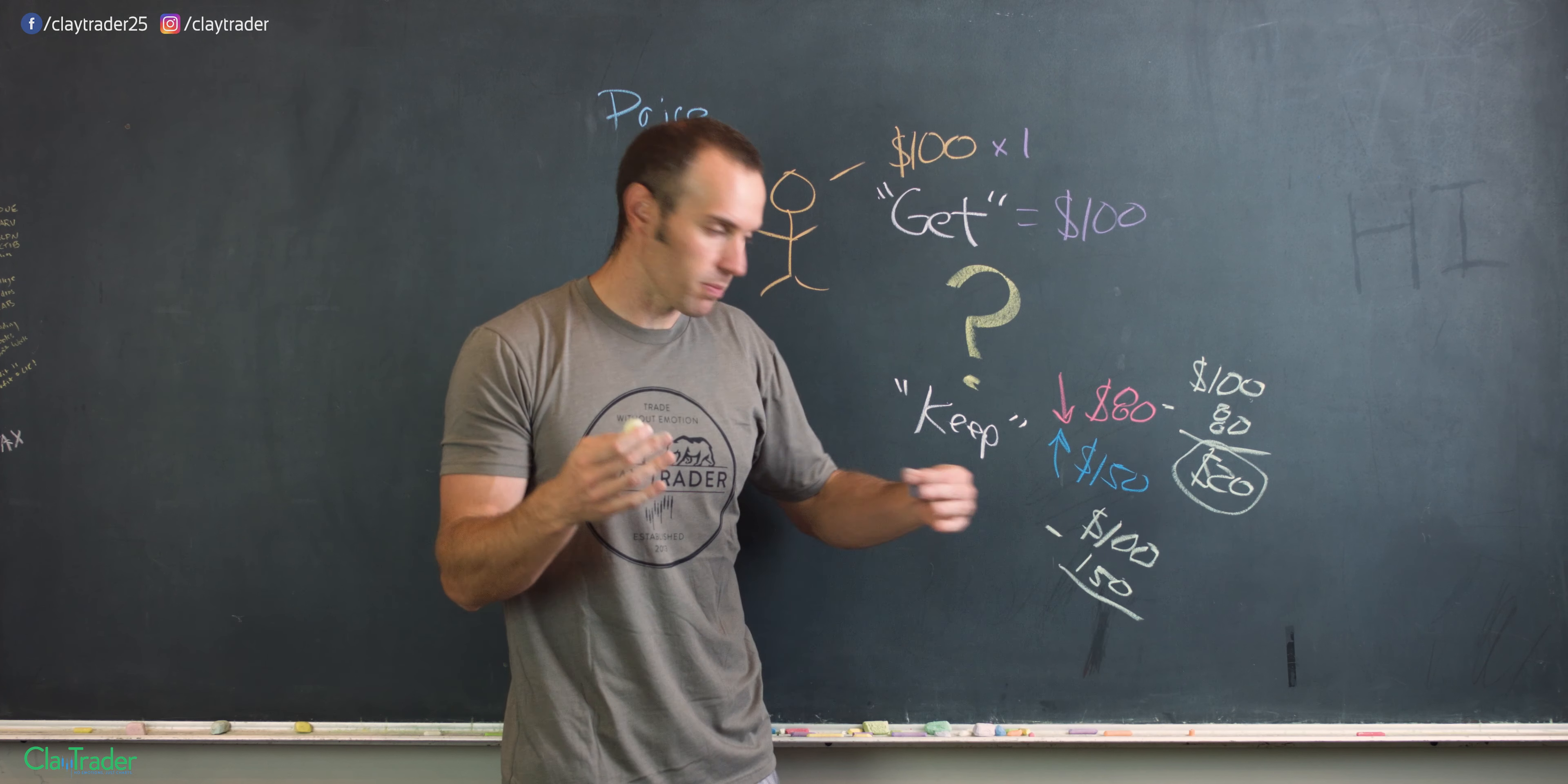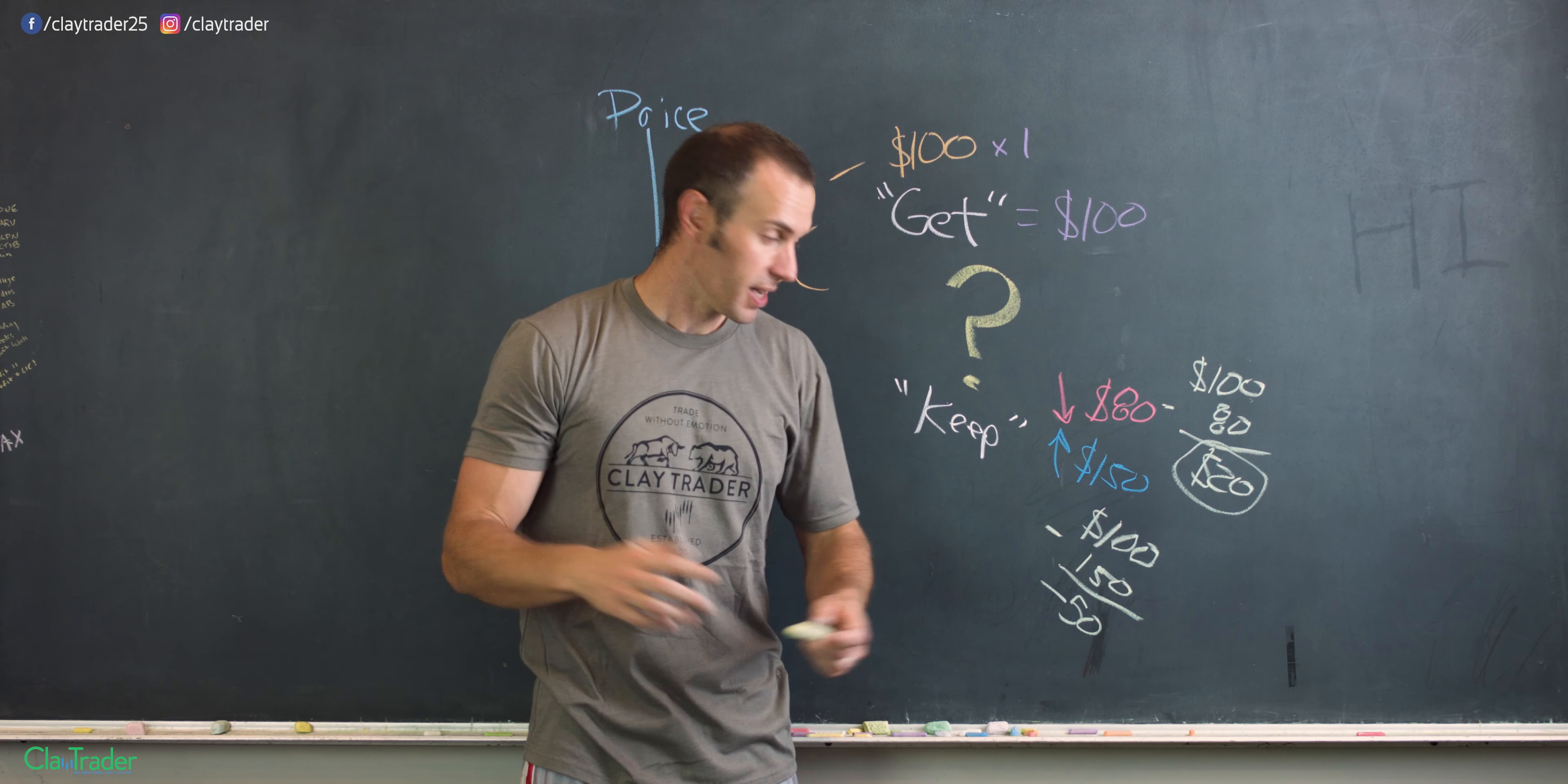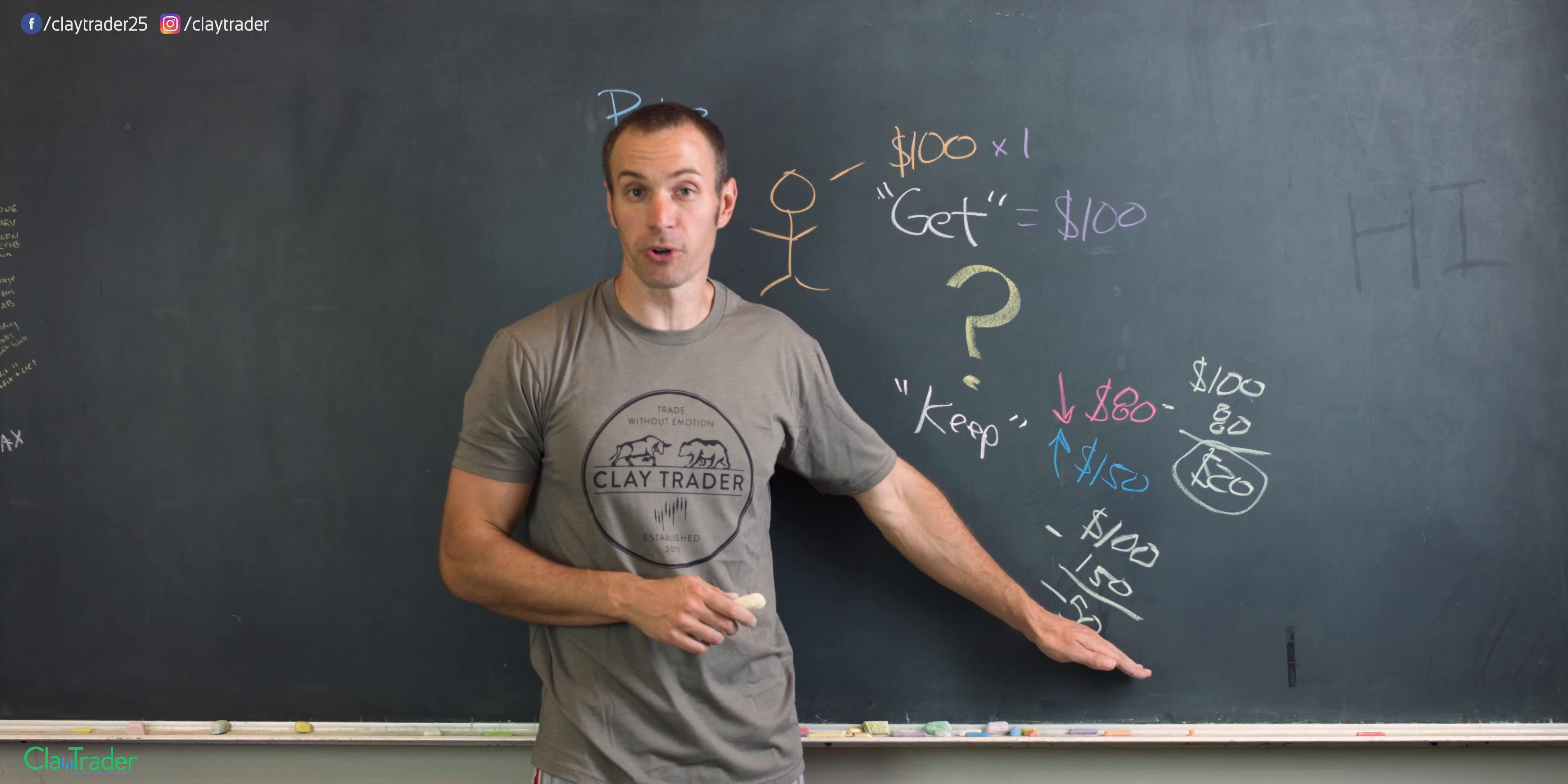So, if you've ever done subtraction, 100 minus 150 puts him at what? A negative 50. Meaning, all the money he got is gone, plus he still owes $50. So not only does he not get to keep anything, he still owes on top of that $50. So from this short-sided trade, that would be a $50 loss per share.